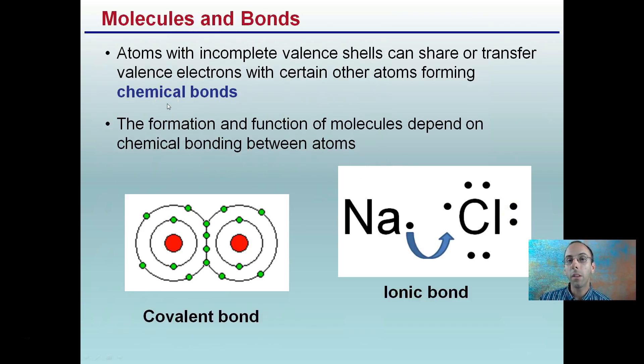Bonds with incomplete valence shells can share or transfer valence electrons with certain other atoms forming these chemical bonds. The formation and function of molecules depend on the chemical bonding between atoms. Two main classifications are going to be covalent bonds, where we see these electrons being shared, and ionic bonds, where electrons are being transferred.